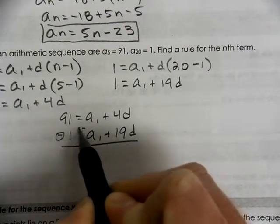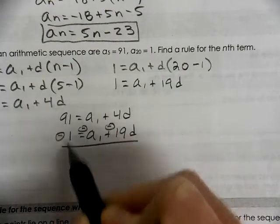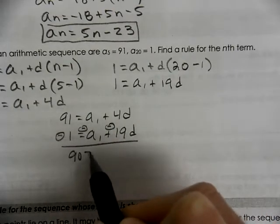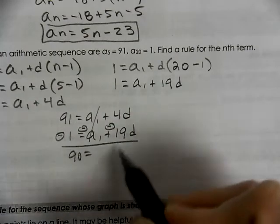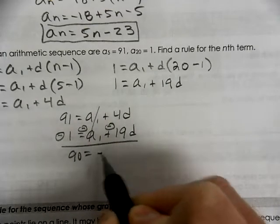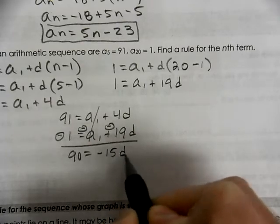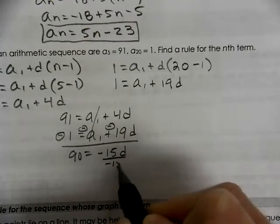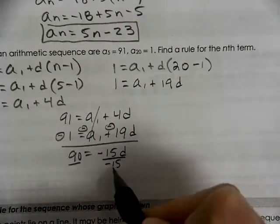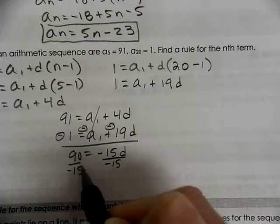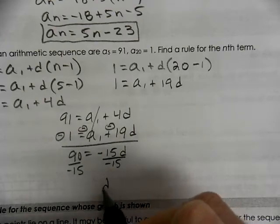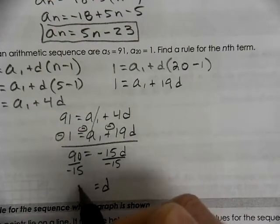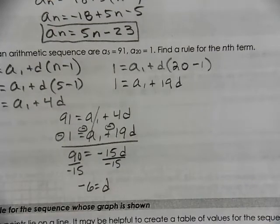Change the signs. So we get 90. The a of 1's cross out completely. We're left with negative 15d. Divide that by negative 15. And we get an answer of negative 6 for the d value.